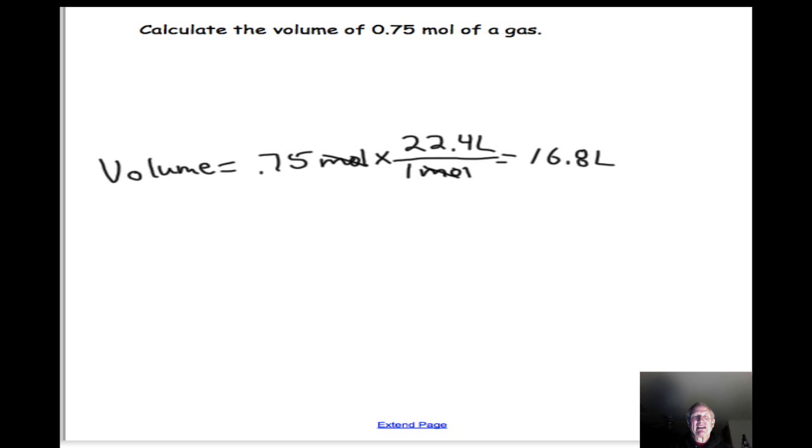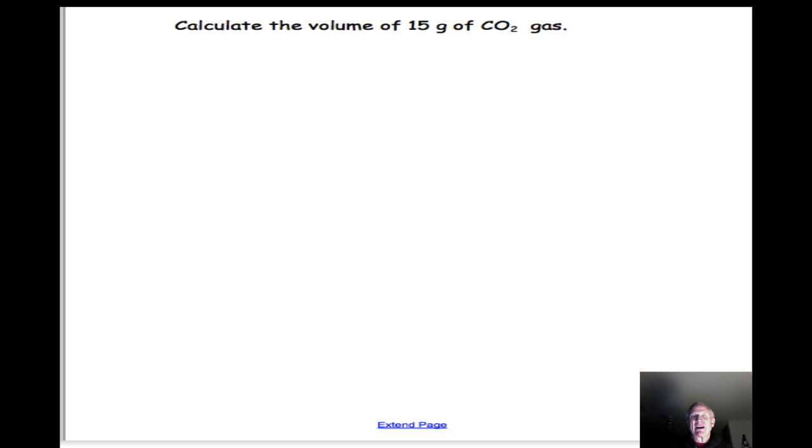Let's look at a problem that combines a couple of these factors together. This one's a little bit trickier. We're trying to calculate the volume of 16 grams of CO2 gas. This is naming a specific gas and giving us a mass instead of number of moles.